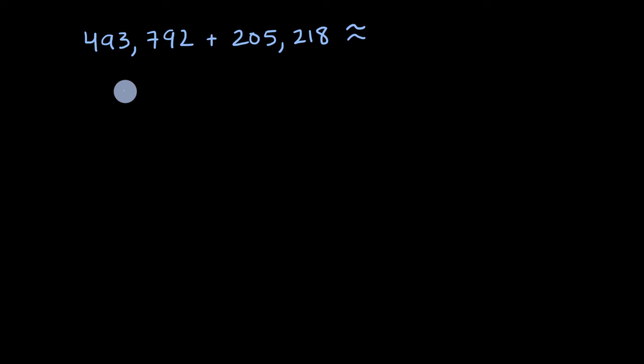So what I'm about to show you, I'm gonna write it down, but this is what I would be doing in my head. So 493,792, if I were to round that to the nearest 100,000, that's approximately equal to 500,000, and 205,218, if I were to round that to the nearest 100,000, that's approximately equal to 200,000.